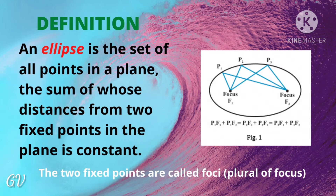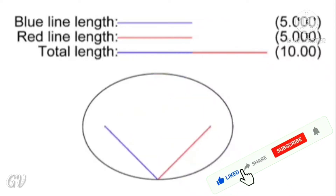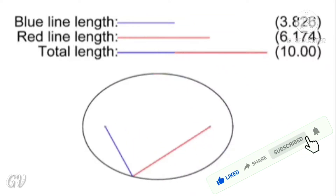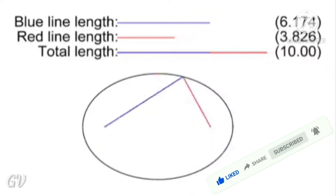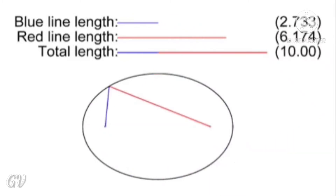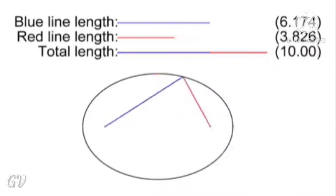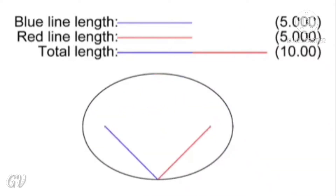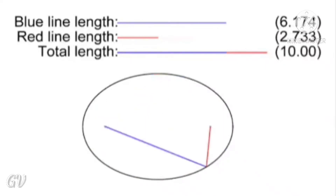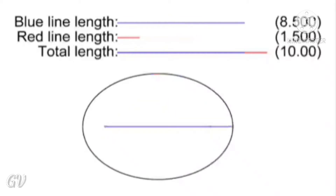So we get an ellipse shape. This definition is easier to understand with a diagram. You can find the two fixed points. There is a red line from each fixed point. If you measure and add those red lines, you will get the same constant value at every point, and collecting all such points gives you the ellipse shape.